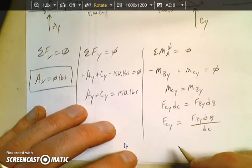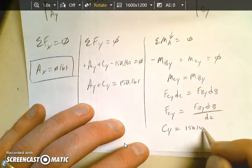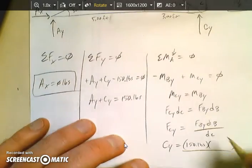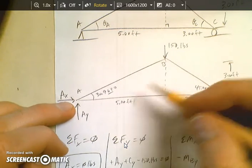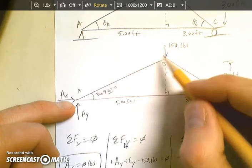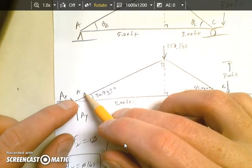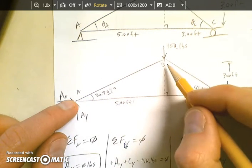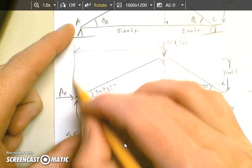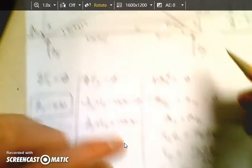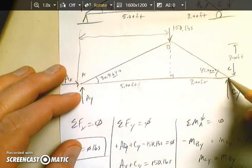So I'm looking for the force at CY. I'm looking for this guy. So force at CY equals force BY times the distance to B over the distance to C. Now I can substitute. CY equals the force at BY is 150 pounds. The distance to B. This is the one that's usually the most missed. And this distance is the horizontal distance between this point and this point. Horizontal distance.